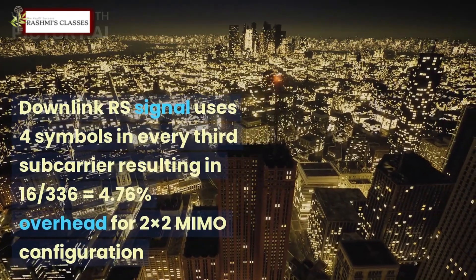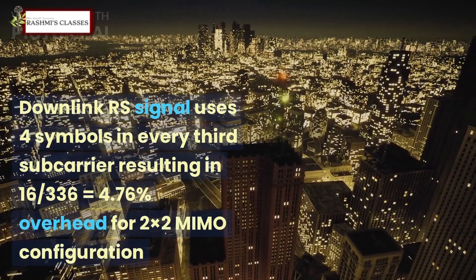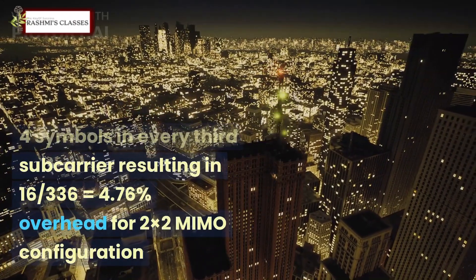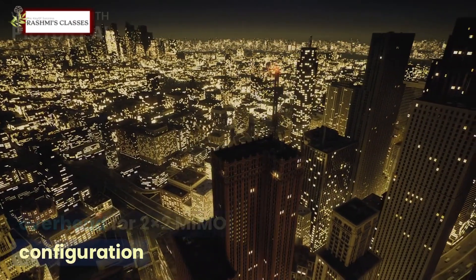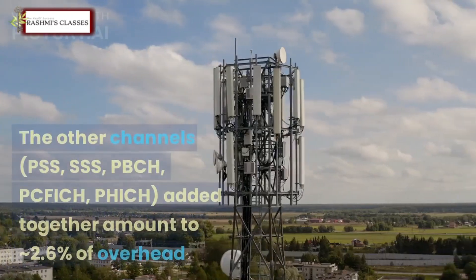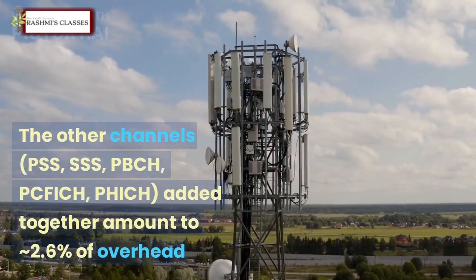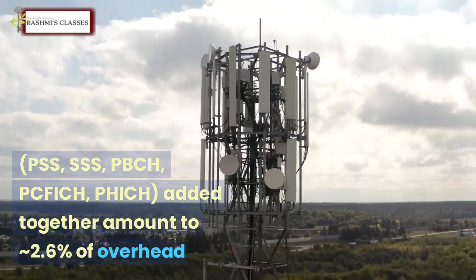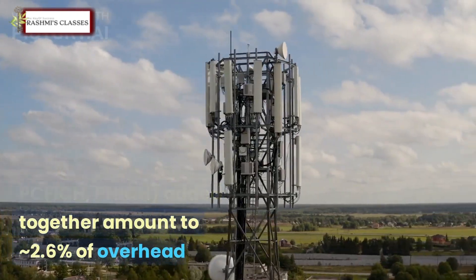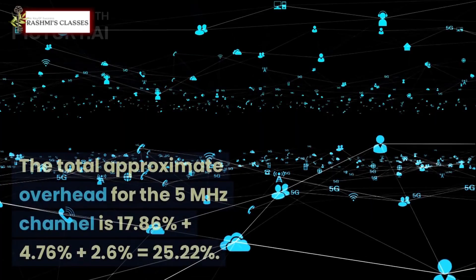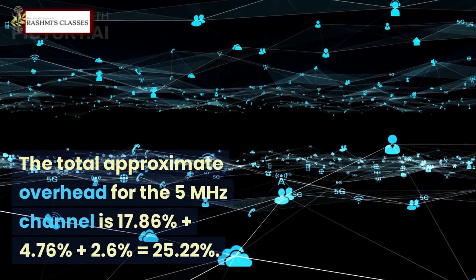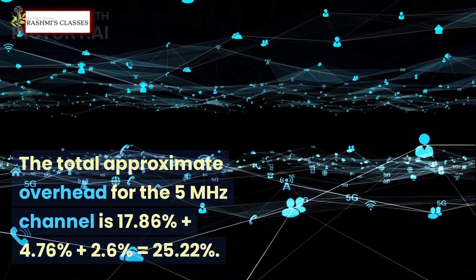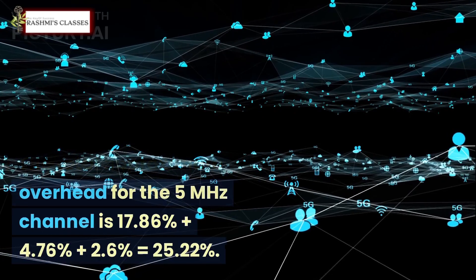Downlink RS signal uses four symbols in every third subcarrier, resulting in 16/336 = 4.76% overhead for 2x2 MIMO configuration. The other channels (PSS, SSS, PBCH, PCFICH) added together amount to approximately 2.6% of overhead. The total approximate overhead for the 5 MHz channel is 17.86% + 4.76% + 2.6% = 25.22%.